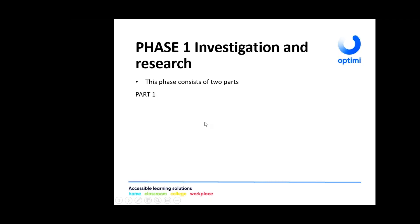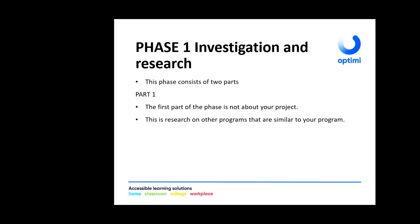Your phase one consists of two parts. Part one is research, where you need to go and look at existing things. For example, a Noughts and Crosses program, a Monopoly program — something that is really out there. This first part is not about your project; it's about what already exists in real life. You need to research other programs that are similar to the program you are going to write.